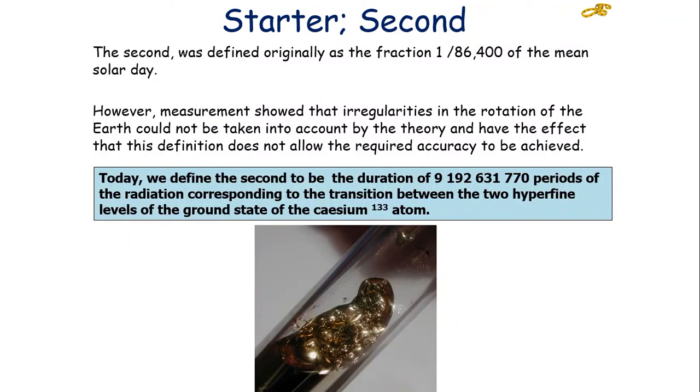So, the mass we used to define the kilogram no longer weighs a mass of a kilogram. The second was originally defined as a fraction of 1/86,400th of the mean solar day. However, measurements showed that the irregularities in the rotation of the Earth could not be taken into account by this theory, and this meant the definition was not accurate. So today we define the second to be the duration of 9,192,631,770 periods of the radiation corresponding to the transition between two hyperfine levels of ground states of the caesium atom.